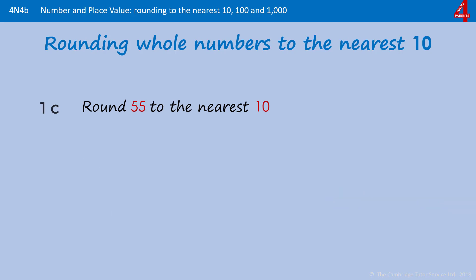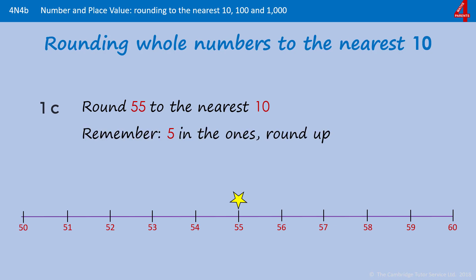And the last one for this section: round 55 to the nearest 10. 55, again, remember that's right in the middle, and the rule is if it's a whole number with a 5 in the ones column, you round it up to the next 10. So that becomes 60.